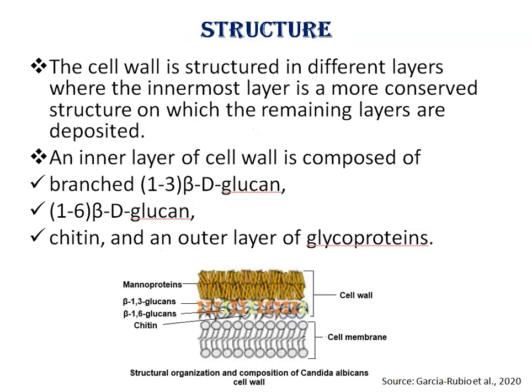The cell wall is structured in different layers, where the innermost layer is a more conserved structure on which the remaining layers are deposited, and these can vary between different species of fungi. You can see here the structural organization and composition of the Candida albicans cell wall — this is the cell wall and here is the cell membrane.